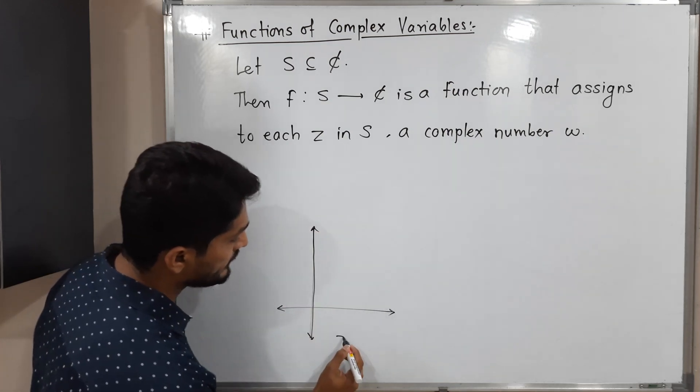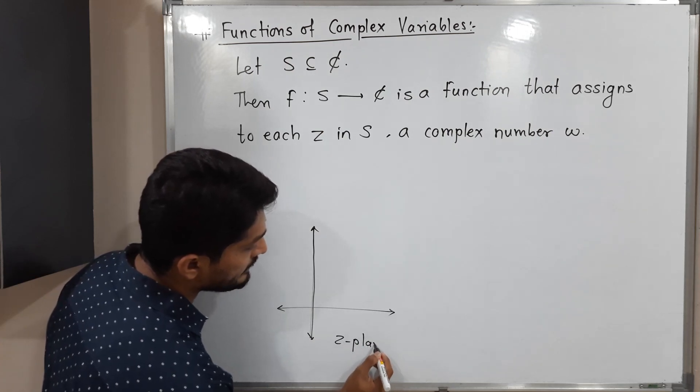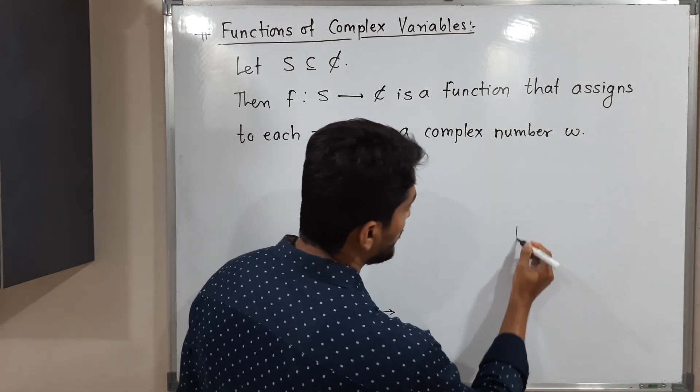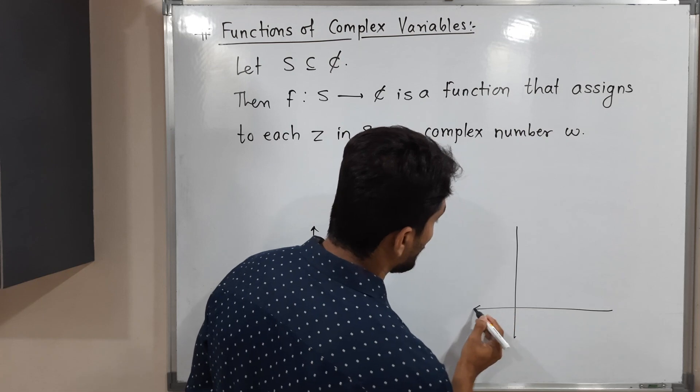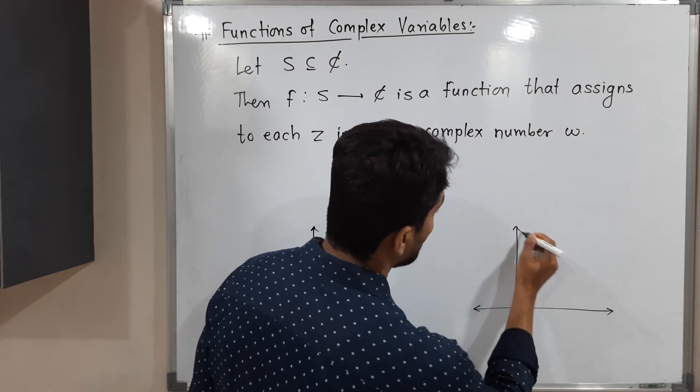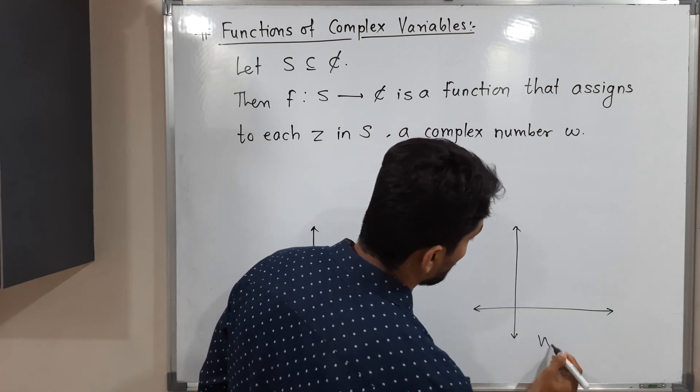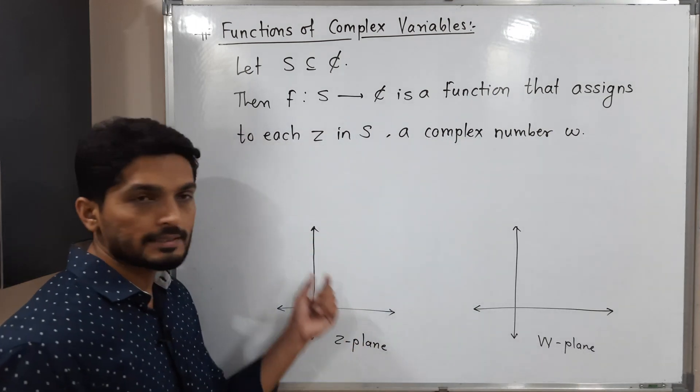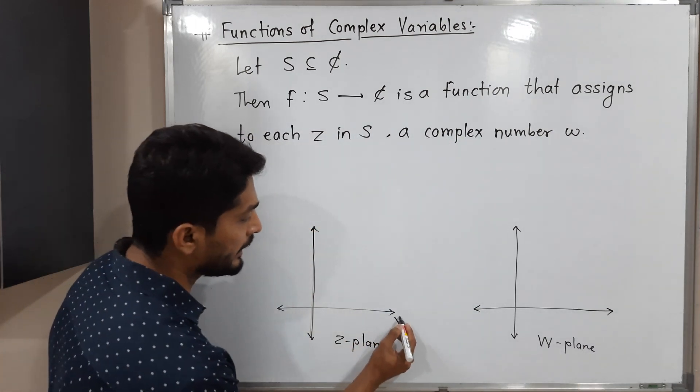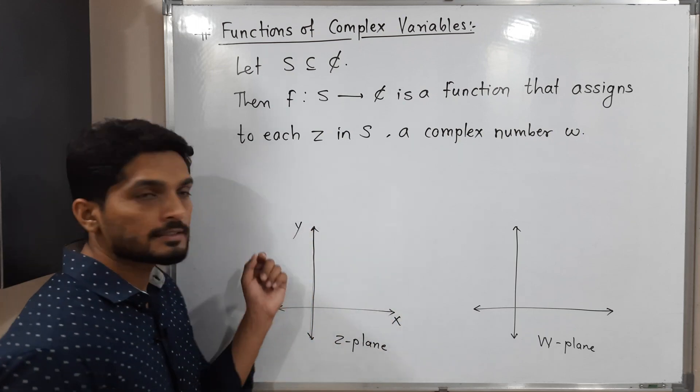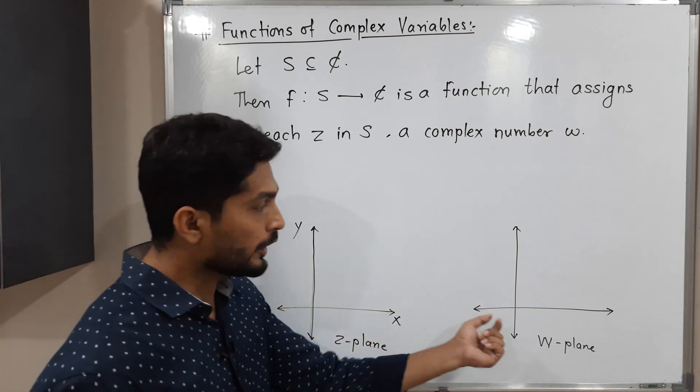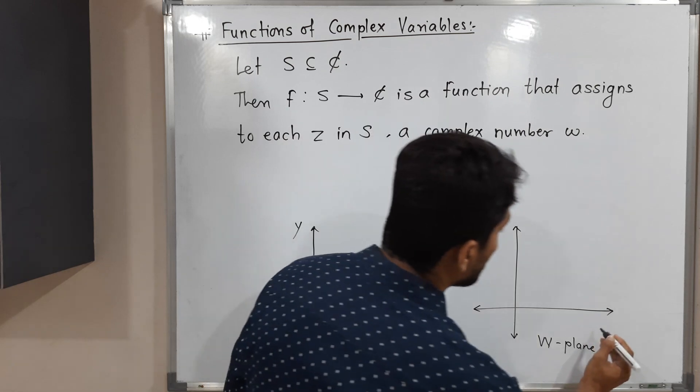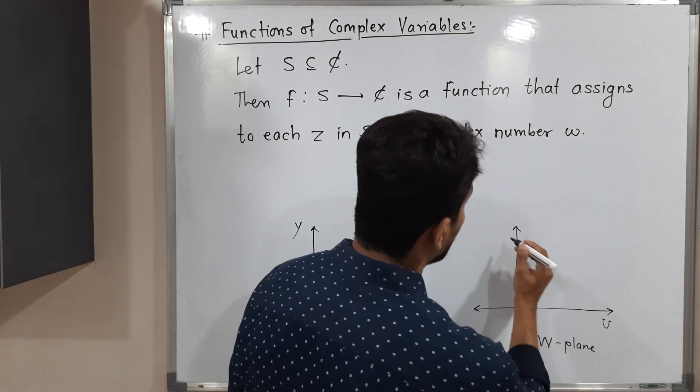We call it the Z plane, and the second plane we call the W plane. The Z plane has two axes: the real axis denoted by X, and the imaginary axis denoted by Y. For the W plane, the real axis is denoted by U and the imaginary axis is denoted by V.